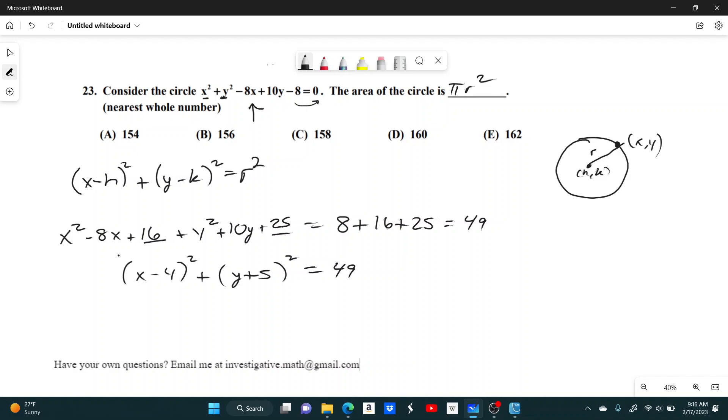And so you can see, by looking at this and looking at our standard form, that r squared is going to be 49. And so the area is just going to be 49 times pi.